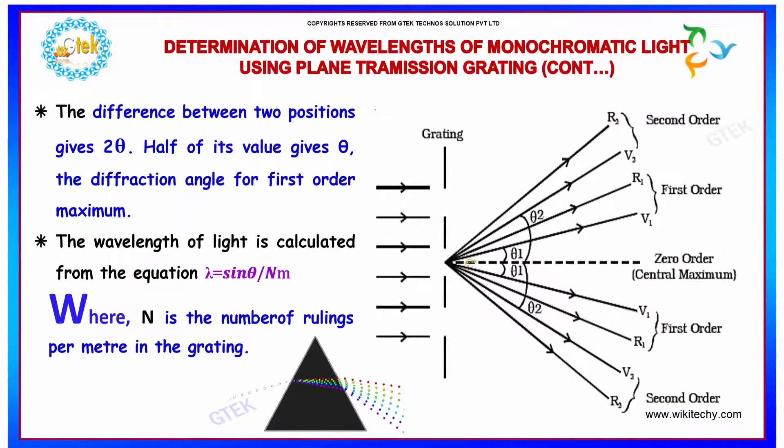The difference between two positions gives two theta. Half of its value gives theta. The diffraction angle for the first order maximum is identified.